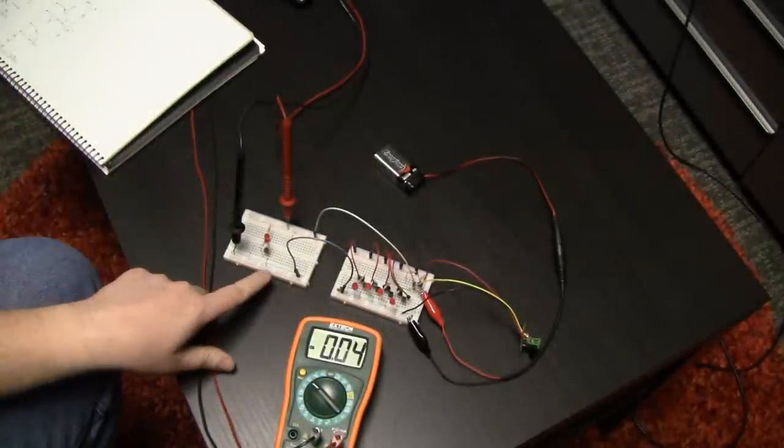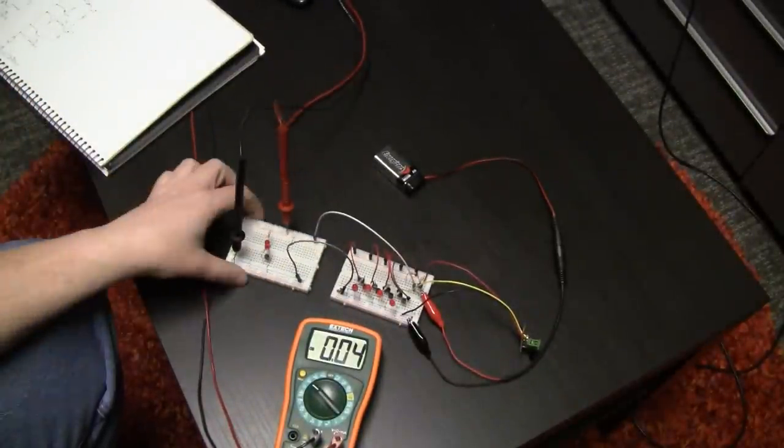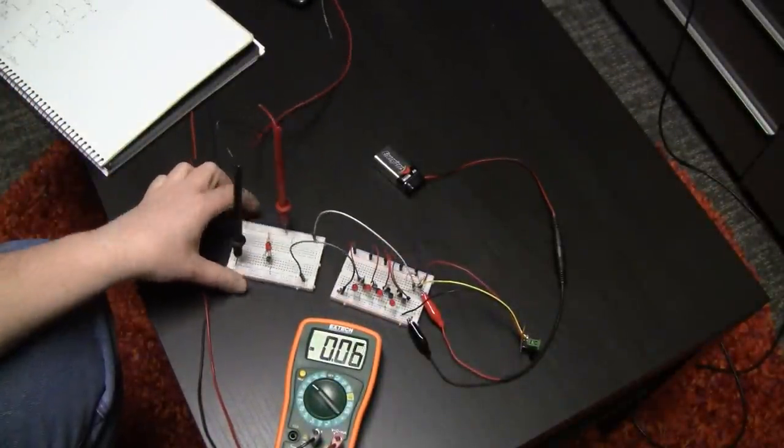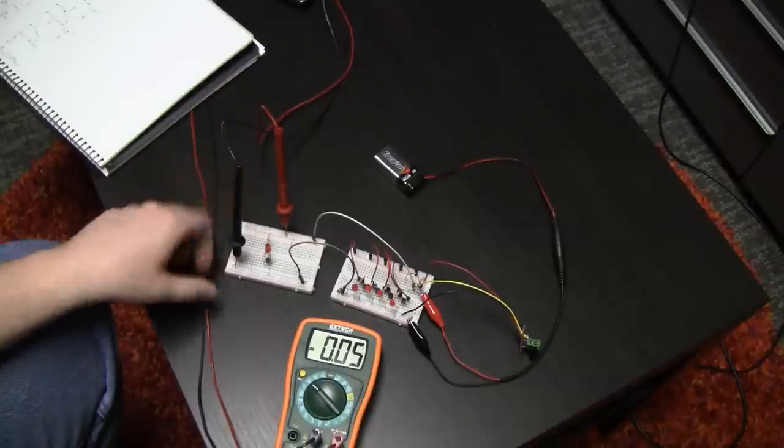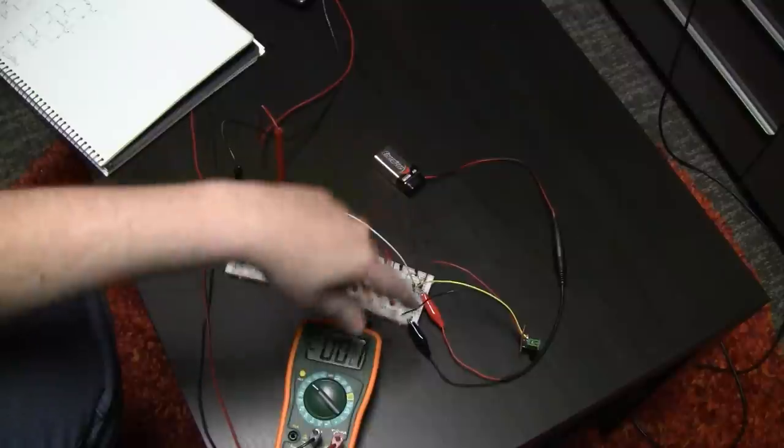So, here we have the simple shunt regulator circuit. Just one transistor, two resistors. I used a 1K resistor for that current defining value. And I've hooked it up to the voltage supply here from the other board.